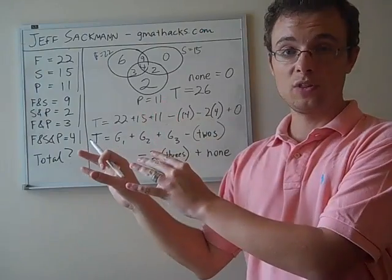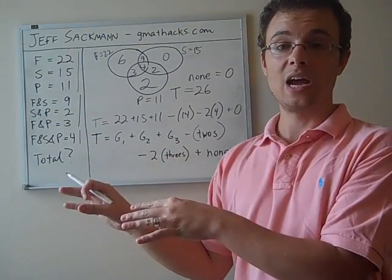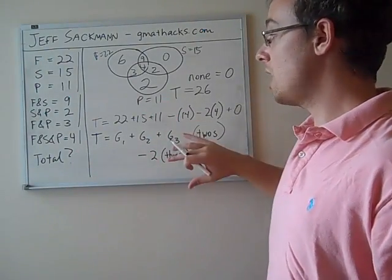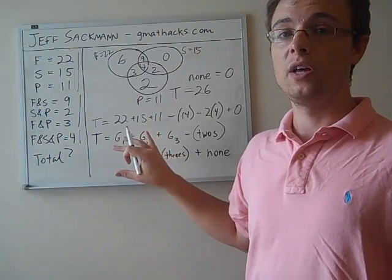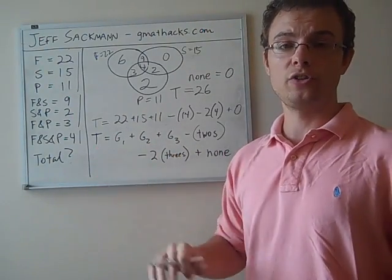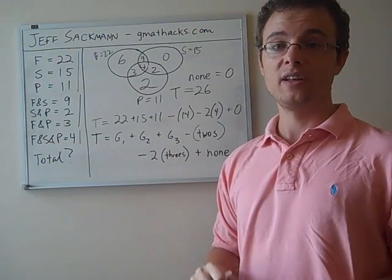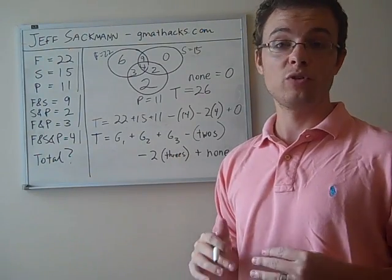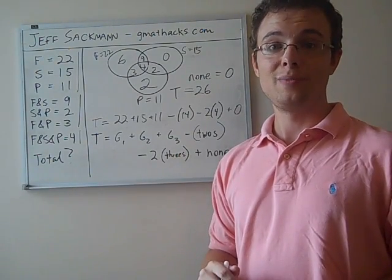But as I mentioned before, practice with the Venn diagram. Make sure you understand how it works. And eventually, get comfortable enough that you can use the formula and plow through these problems a lot faster. So that is how to approach a question with three overlapping sets. You're now ready for one of the more difficult question types on the GMAT math section.